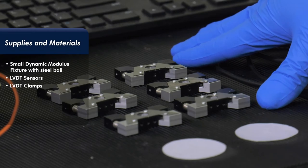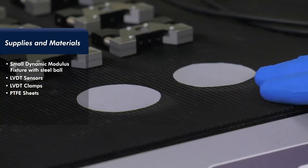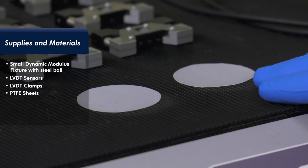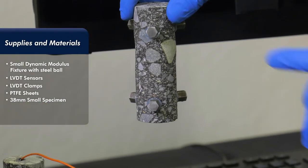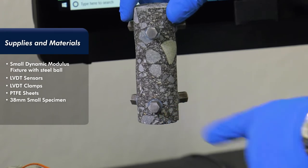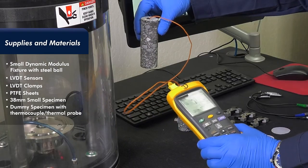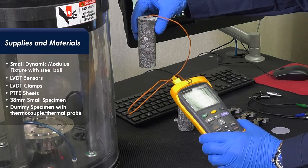LVDT clamps, 0.25 millimeter thick and 40 millimeter diameter PTFE sheet, 38 millimeter diameter by 110 millimeter tall specimen, and dummy specimen with thermocouple thermal probe installed in the middle of the test specimen.